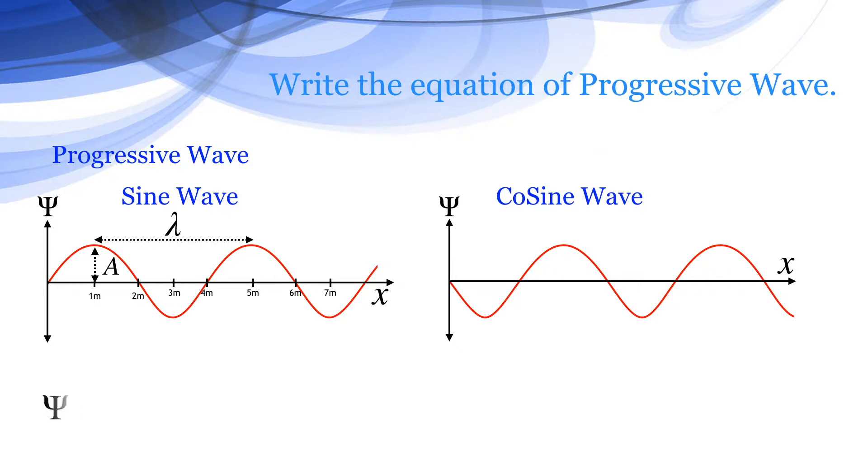The equations for both the waves are similar, like psi equals A sine of 2π by λ x for the sine wave. And for cosine waves, psi equals A cos of 2π by λ into x, where λ is the wavelength and A is the amplitude of the wave.